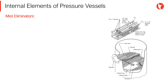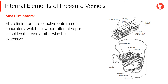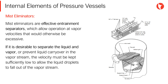The mist pads, or mist eliminators, are important internals in process vessels. Anytime there is a continuous two-phase flow of vapor and liquid, there is a possibility for liquid entrainment. If it is desirable to separate the liquid and vapor, or prevent liquid carryover in the vapor stream, the velocity must be kept sufficiently low to allow liquid droplets to fall out of the vapor stream. Mist pads are effective entrainment separators which allow operation at vapor velocities that would otherwise be excessive.